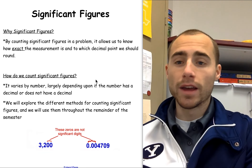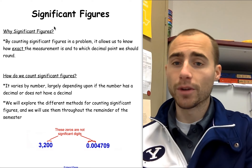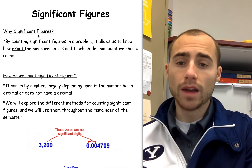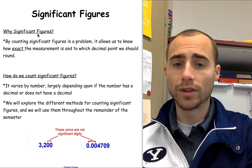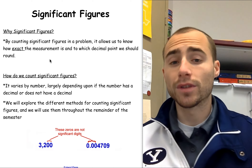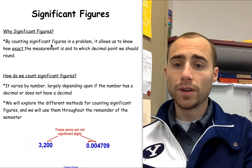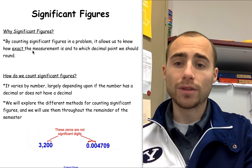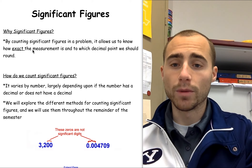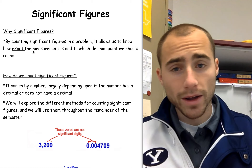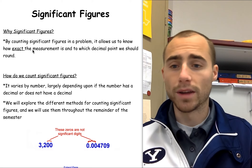Here we're going to look at significant figures. Significant figures is something that's going to help us out a lot in chemistry throughout the rest of the year, because it's going to allow us to understand what we should round to whenever we're doing different math equations and different chemical equations. It also allows us to know if something is an exact measurement or a rounded number. By counting the significant figures in a problem, that allows us to know how exact the measurement is and to what decimal point we should round.